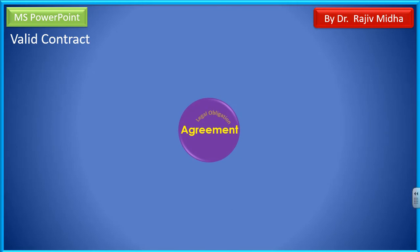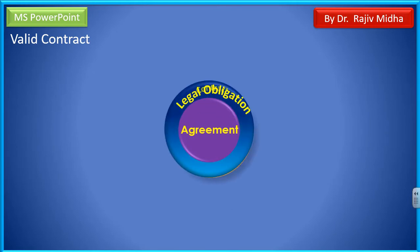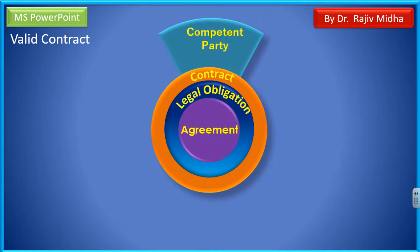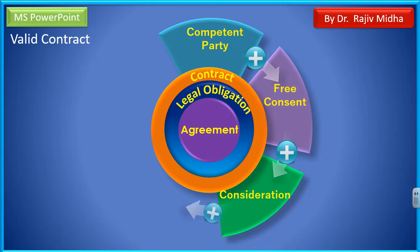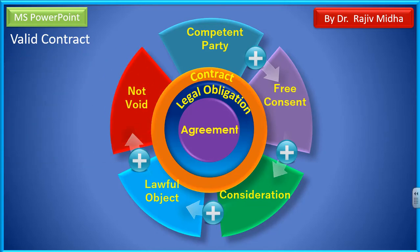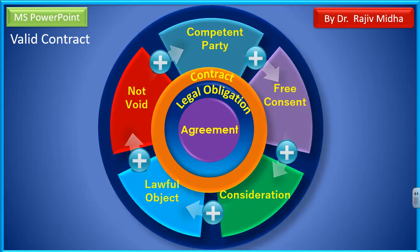Now: valid contract. Agreement, legal obligation — it makes a contract. But in order to be a valid contract, we need to have certain essential elements. The first one is competent party, second one free consent, the third one consideration, the fourth one lawful object, and the last one is not declared to be void. اگر ان پانچوں elements کو ملا دیا جائے تو ایک contract becomes a valid contract۔ Now it becomes very easy for the student to understand کہ کیسے agreement سے چل کر valid contract تک ہم پہنچ سکتے ہیں۔